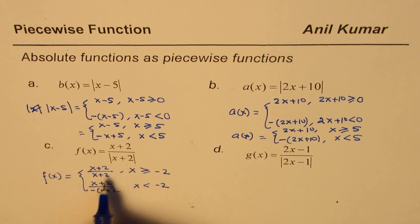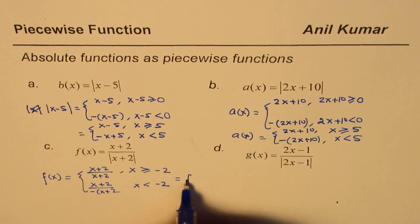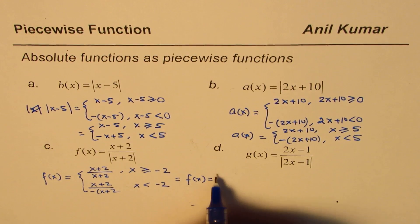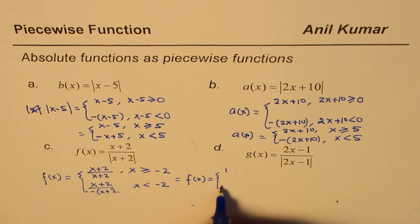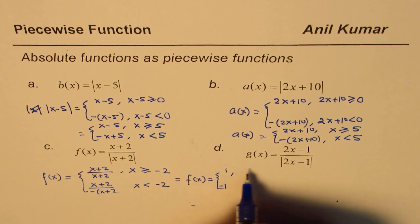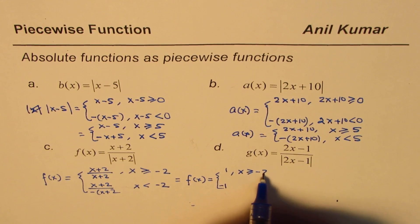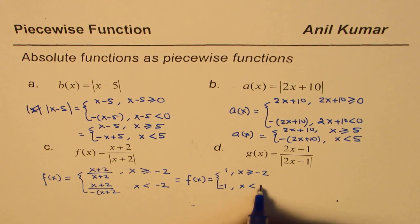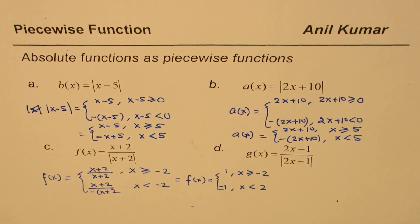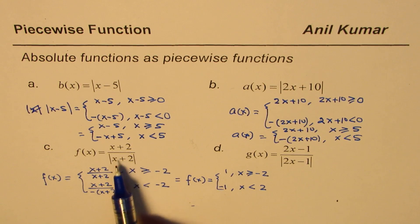So this function could be actually written as f(x) equals to plus 1 and this is minus 1 when x is greater than equal to minus 2 and in this case x is less than -2. So that is how you could define this function.